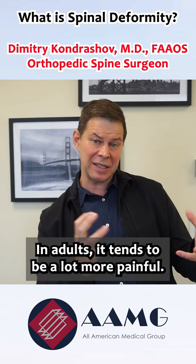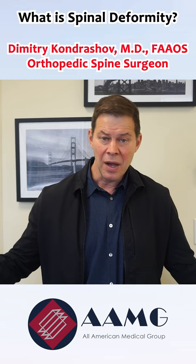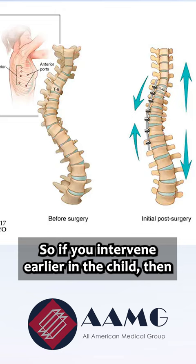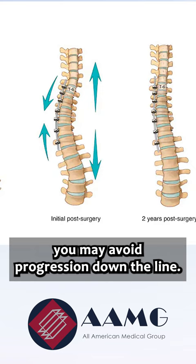So why operate on kids with a deformity? Well, the main reason is the magnitude, the degree of the curve, and the progression. So if you intervene earlier in a child, then you may avoid progression down the line.